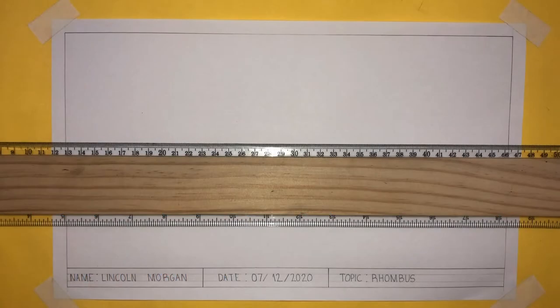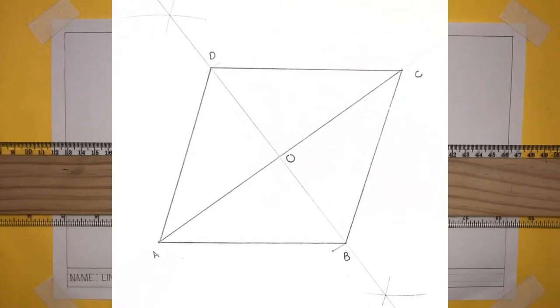A rhombus is a quadrilateral having four sides. The rhombus consists of four edges. Each side of the rhombus are equal in length. The rhombus also consists of four internal angles that are not 90 degrees.